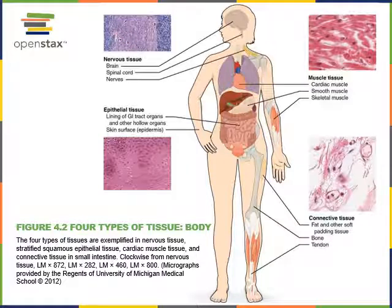Here are the four major tissue types. Remember, the definition of tissue is a group of cells working together to perform a common function. The four major types of tissue are nervous tissue, epithelial tissue, muscle tissue, and connective tissue.